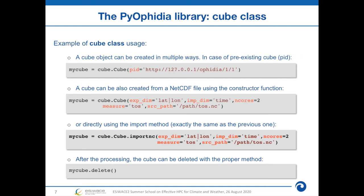A cube object can be created in multiple ways. Basically, we can identify two scenarios. The first is where we already have a data cube in the Ophidia framework and want to use it from Python — the cube class constructor can be used to create a new cube object in Python and link it with the remote data cube based on its persistent identifier, the PID argument. In the second case, where we need to create a new data cube from a NetCDF file, we can specify the file path, variable to import, dimensions, and other information from the class constructor. The constructor is directly mapped to the OPH_IMPORTENC operator, which is responsible for loading the data.